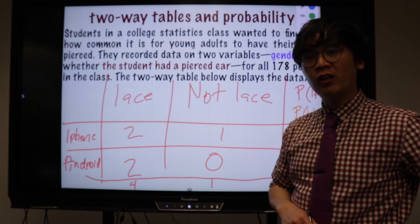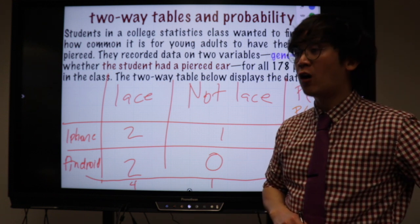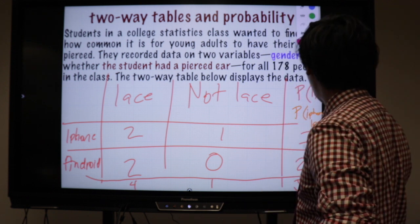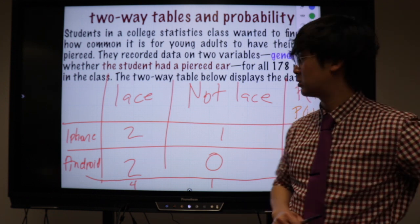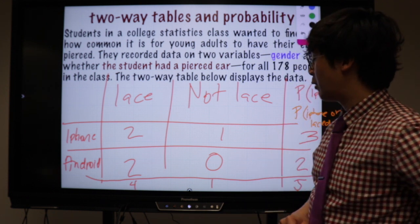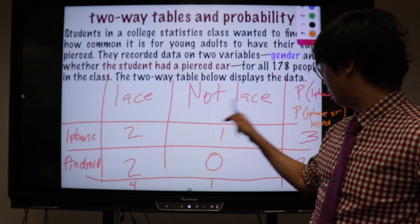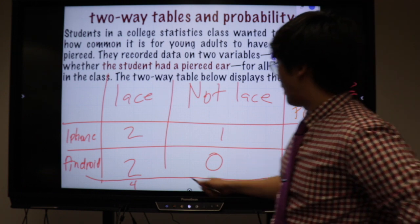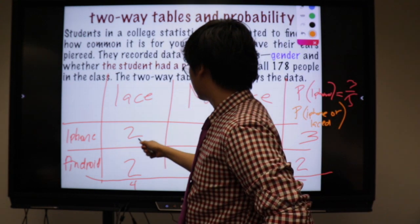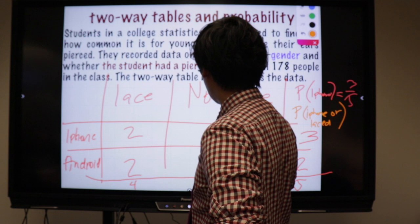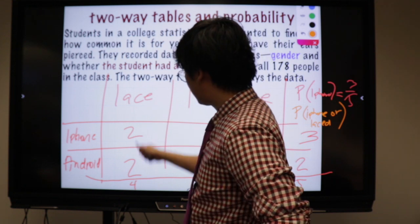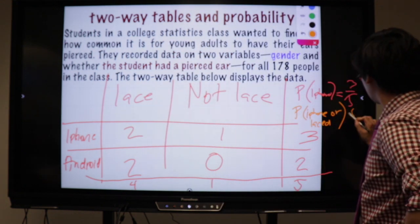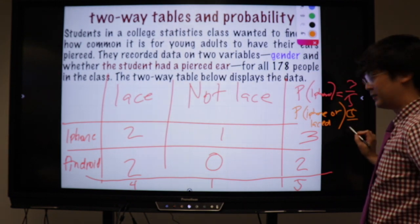What about the probability of a student having an iPhone OR lace shoes? It's an addition (union) operation. You add all persons who have an iPhone or lace shoes, being careful not to double-count. The OR operation gives a larger probability than the AND operation.